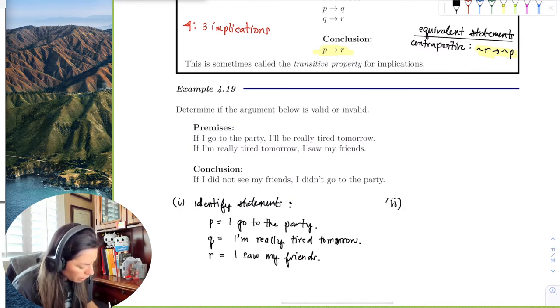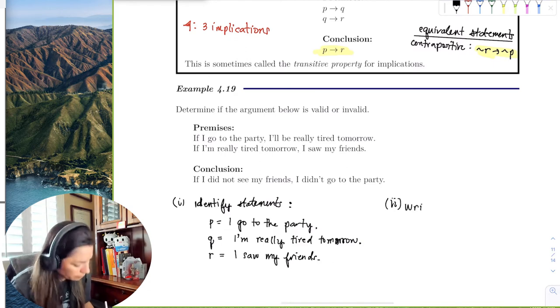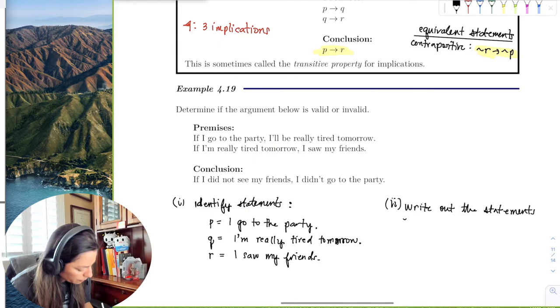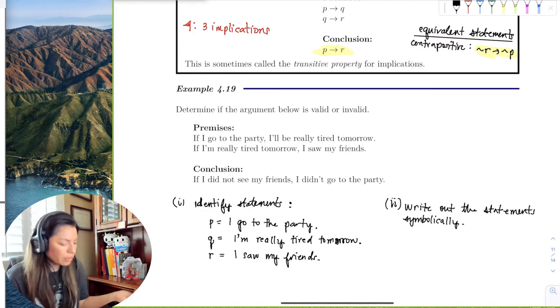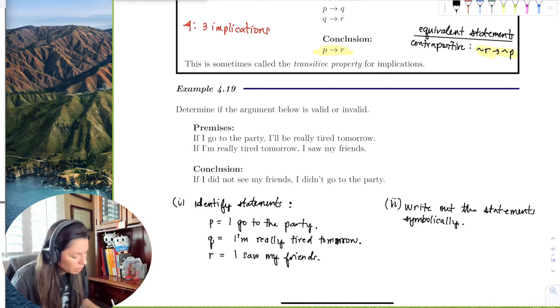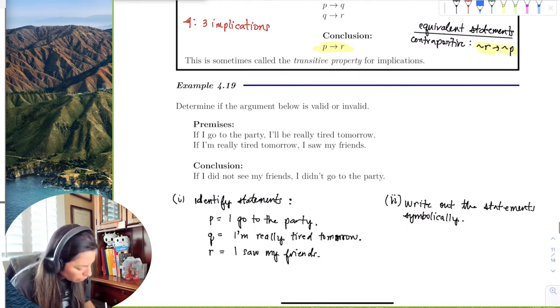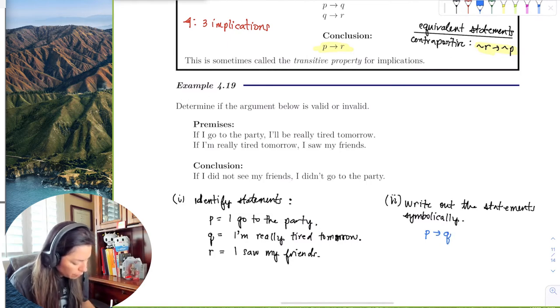So the second part would be to write out the statements symbolically. Now remember, we want the conclusion to either be the implication or the contrapositive. So let's go ahead and do that. So the first statement would be, if I go to the party, then I'll be really tired tomorrow. So if P, then Q.